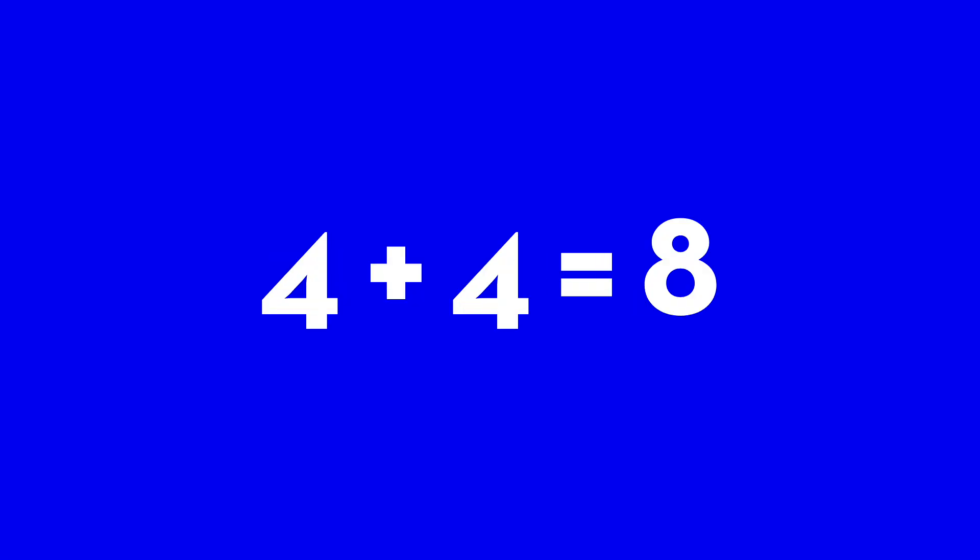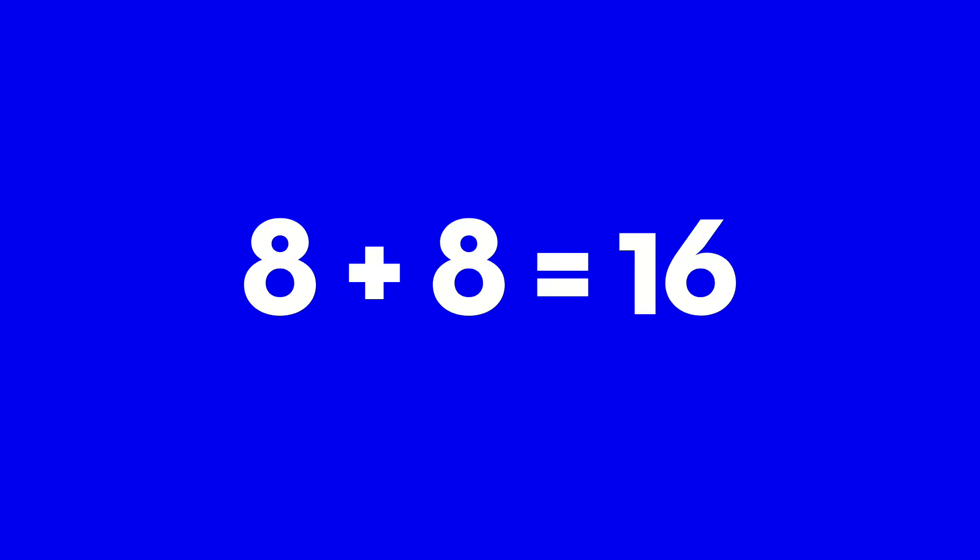For the most part, we already know how to count in a base ten system because we get taught this from an early age, so it's so ingrained in everything around us. For example, if we had the number nine and we wanted to increase that by one, we know that nine becomes ten. Ten is not actually a unique symbol — it's made up of two symbols: one and zero.